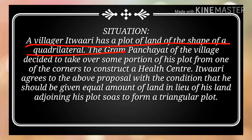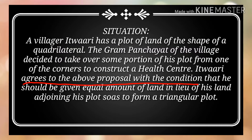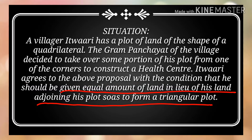Etwari is a villager and the gram panchayat wants a portion of his land to form a health care center for the village. Etwari agrees to the above proposal but kept some conditions: he demanded land attached to his plot to form a triangular plot as a whole, with the same area as the field taken by the panchayat to form the health care center. We need to help the gram panchayat execute this proposal.